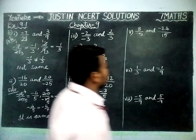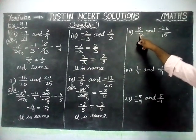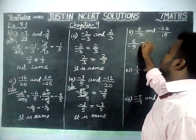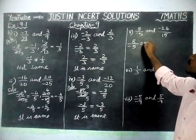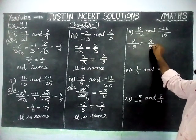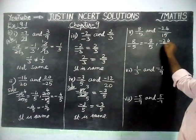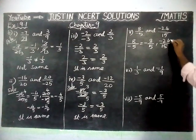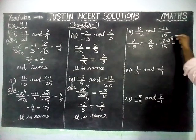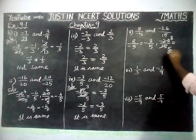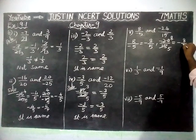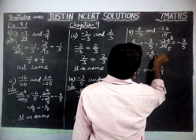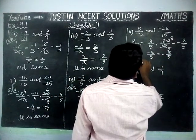Fifth pair: 8 by minus 5 — the minus is a common sign, so we write it as minus 8 by 5. Next: minus 24 divided by 15. We simplify by 3 — 8×3 is 24, 5×3 is 15 — giving minus 8 by 5. So minus 8 by 5 equals minus 8 by 5 — it is the same.